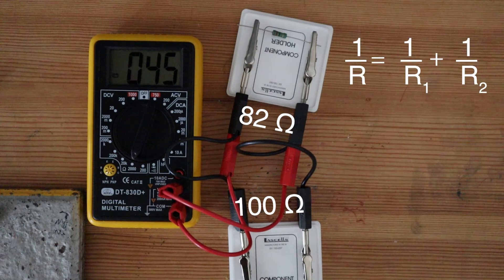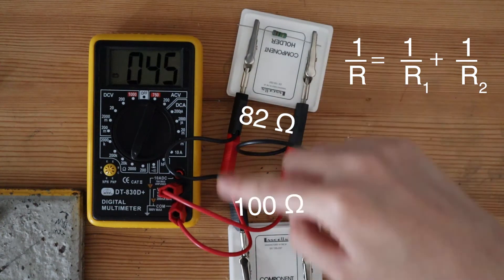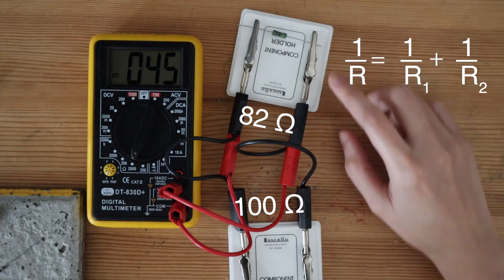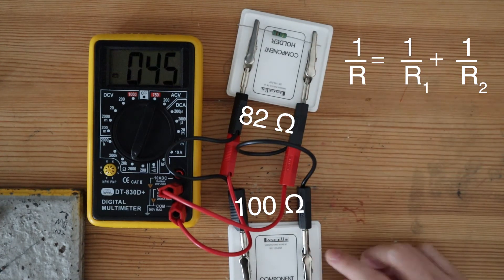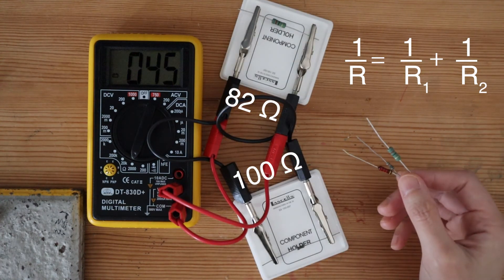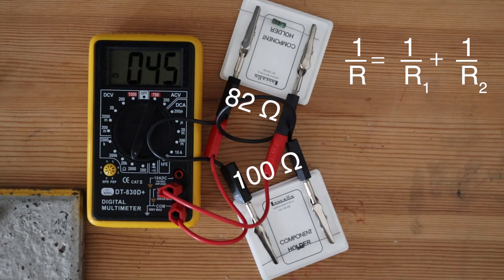1 over R is 1 over R1 plus 1 over R2. Capital R is the total resistance in the circuit. R1 is the resistance of the first resistor. R2 is the resistance of the second resistor. If you have more than two resistors in parallel, you will then have R3, R4, R5, etc.